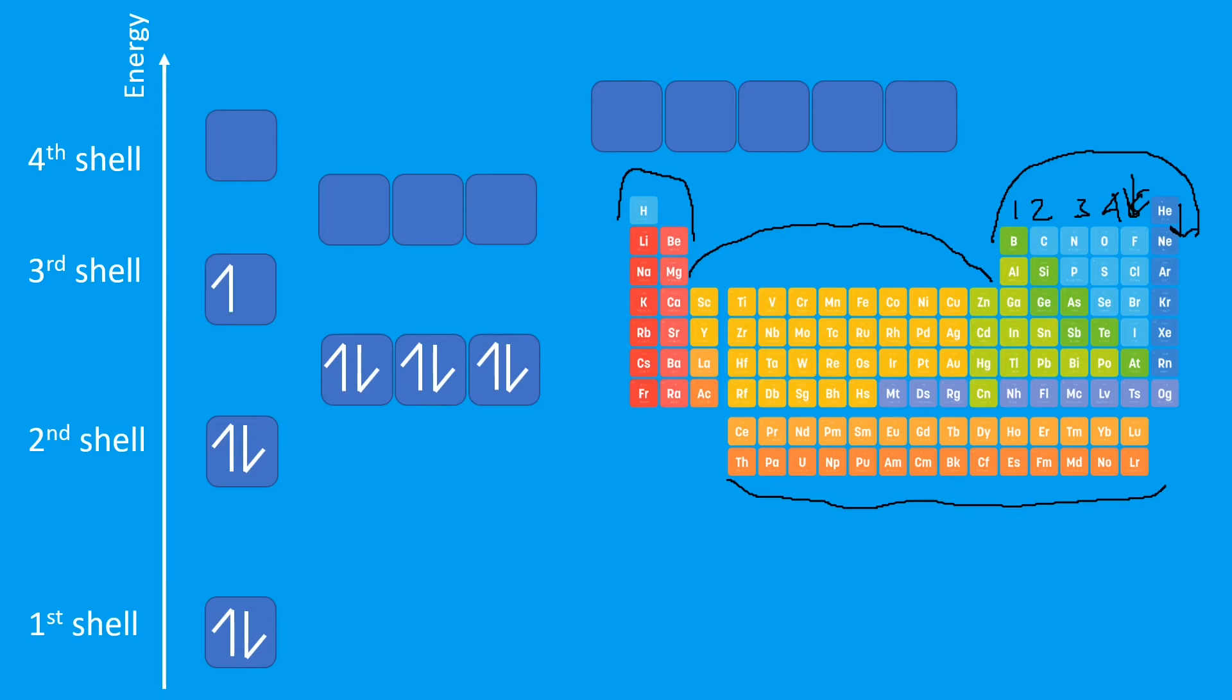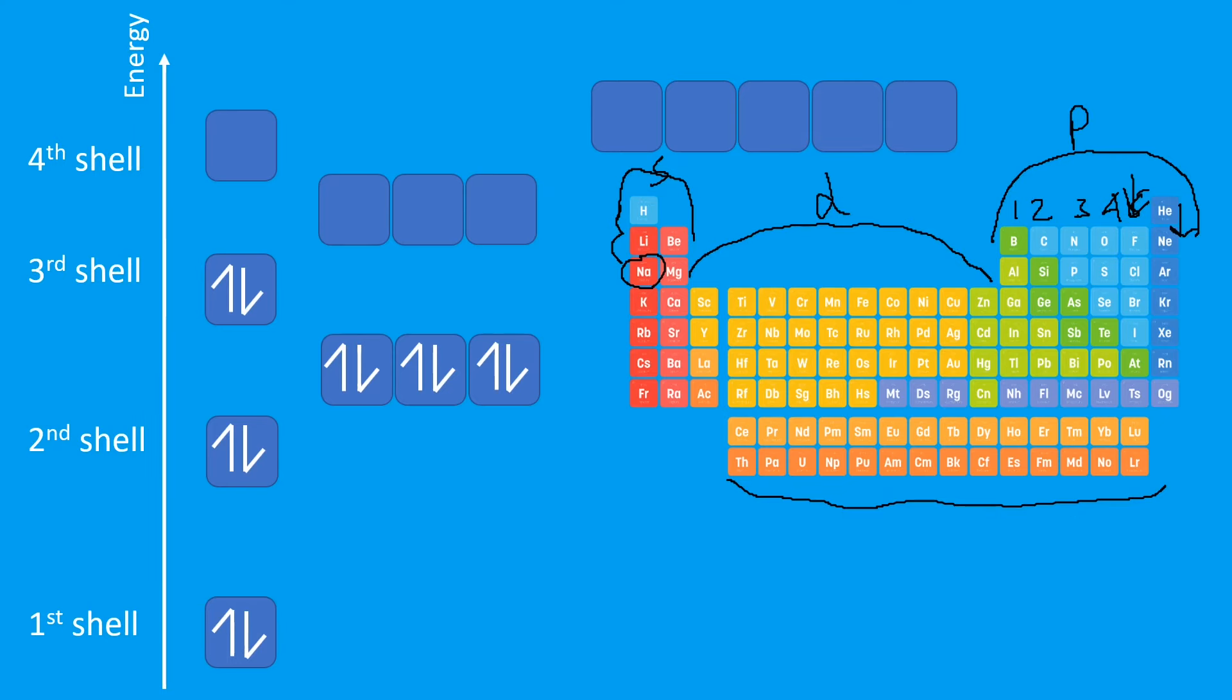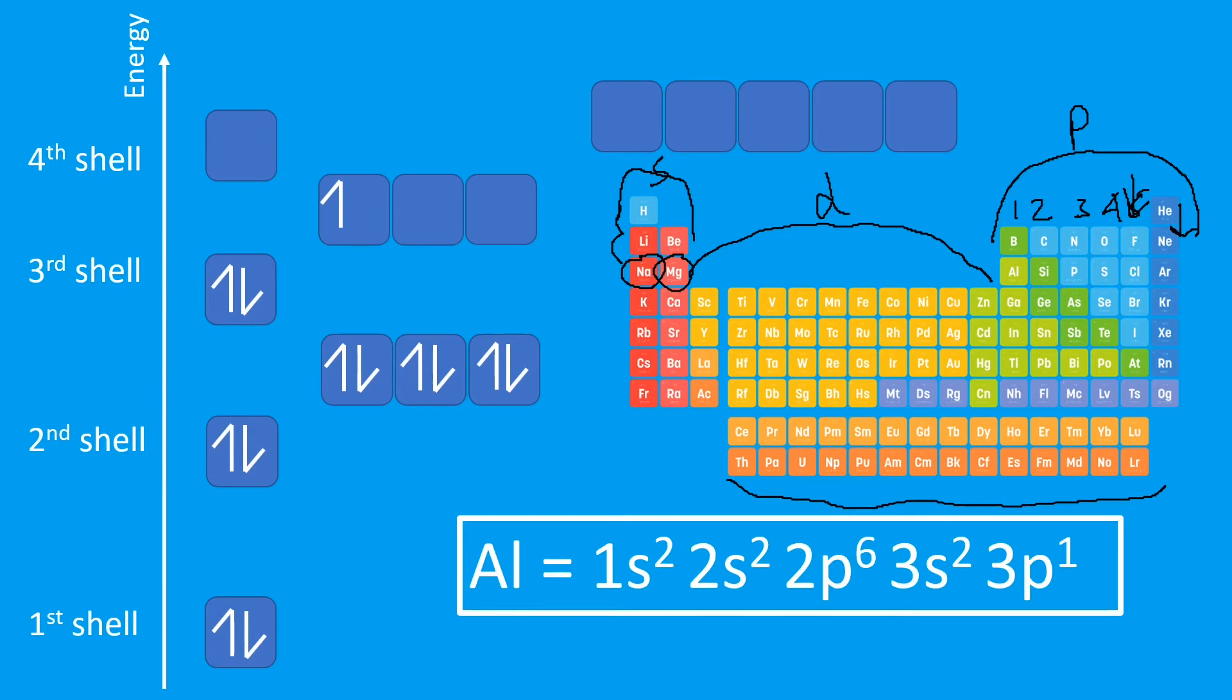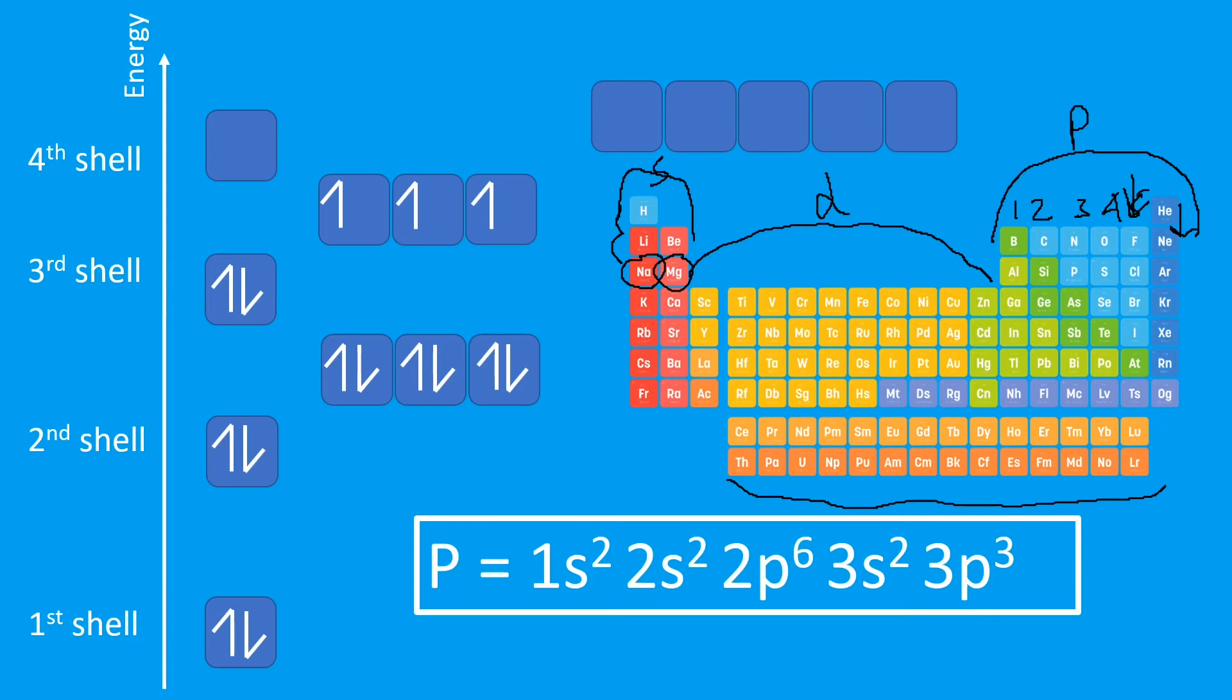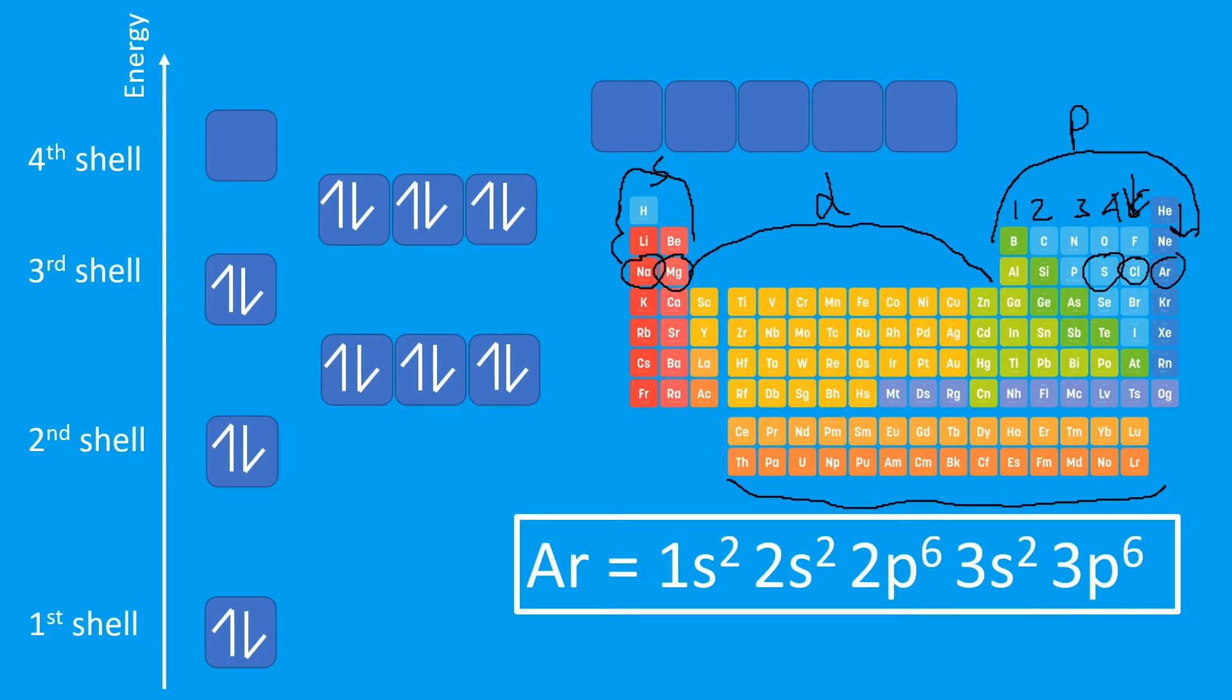2p6 goes across to neon, and then we need to start the third shell because the second shell is now full. That's 3s1, sodium. It's three down and it's s1. This is the s block, this was the d block, and this was the p block. 3s2, magnesium. Magnesium two along in the s block, three rows down, 3s2 is the outermost electron shell. Then we need to start filling the 3p shell, 3p1, in the exact same way that we did with the 2p. So p1, p2, p3, they don't pair up until they have to, and that's once we get to sulfur. Sulfur is now p4, chlorine p5, argon p6.